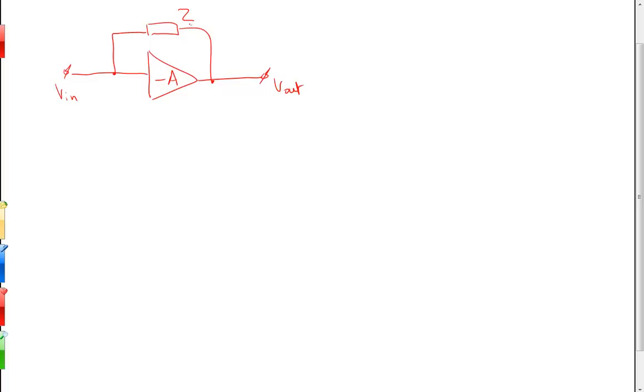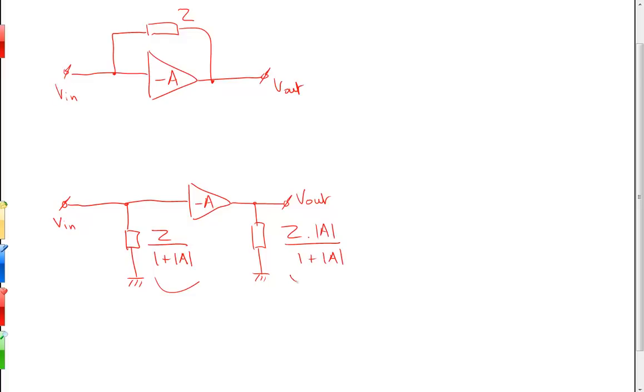The Miller Theorem states that the equivalent circuit looks like this. Observe that the input impedance is equal to Z divided by 1 plus the open loop gain, and the output impedance is Z times the open loop gain divided by 1 plus the open loop gain.